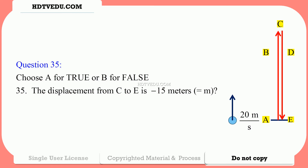The displacement from C to E is negative 15 meters. Position C is positive 20; position E is 0. Final minus initial: 0 minus 20 is negative 20. So question 35, the answer is false.